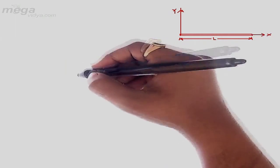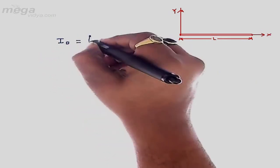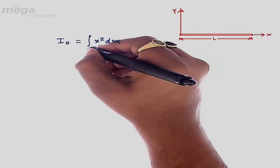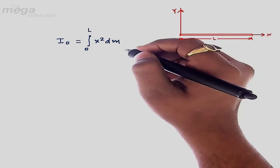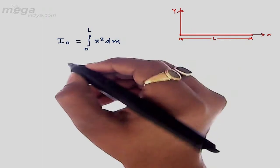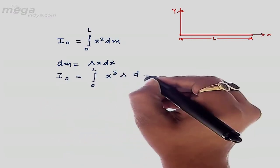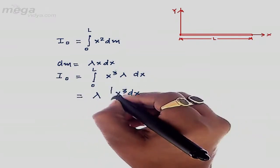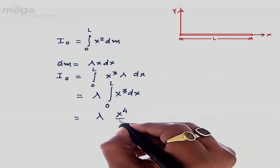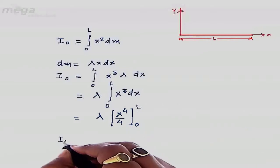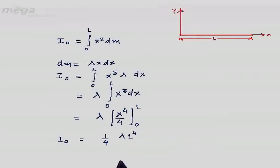According to the definition of moment of inertia, I₀ equals the integration of x² dm from 0 to L, where dm is the elementary mass and x is its distance from the y-axis. Since dm = λx dx, we get I₀ = λ∫x³ dx from 0 to L, which evaluates to (1/4)λL⁴. This is the moment of inertia along the y-axis.